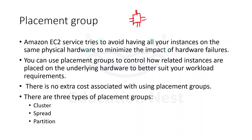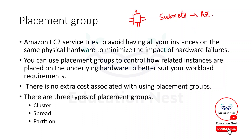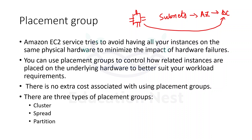In the previous module we understood that EC2 instances would be launched inside of our subnets. These subnets are created inside of availability zones. Availability zones are nothing but a combination of data centers. So ultimately, an EC2 instance resides inside a data center on some server rack.